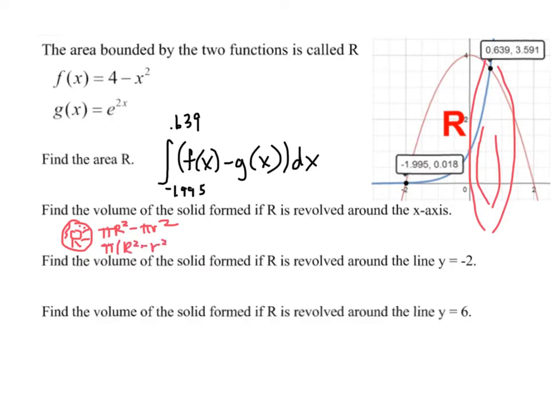Now, I point this out because sometimes people think that you just find the difference in the radius and square it. Squaring is not distributive, so we can't subtract the two things and square it. We have to square each separately.